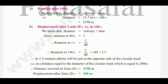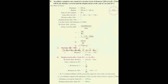Distance after 140 s: distance = velocity × time = 15.7 × 140 = 2198 m. Displacement after 2 minutes 20 seconds (140 s): rotations in 140 s = (1/40) × 140 = 3.5 rotations. In 3.5 rotations, the athlete will be at the opposite side of the circular track. The displacement equals the diameter of the circular track = 200 m. Therefore: distance covered = 2198 m, displacement = 200 m.